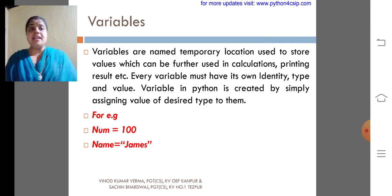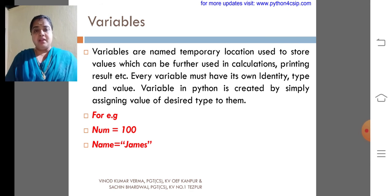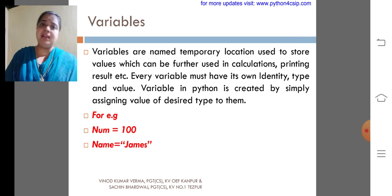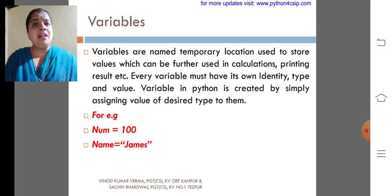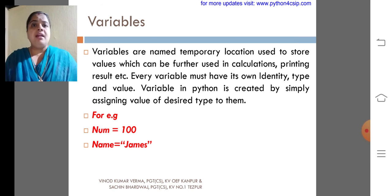Variable in Python is created by simply assigning the value of desired type to them. There is no need to specify the data type of a variable like other programmings. If you want to make a variable as an integer type, just assign the value with the variable. Look at the example I had given. Num equal to 100. Here, what is the type of num? Nothing but integer.